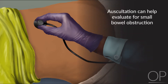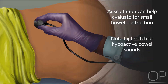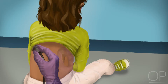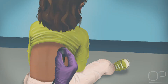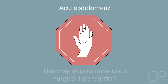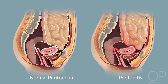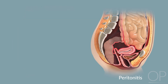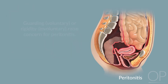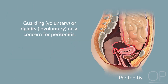Auscultation can be helpful in evaluating small bowel obstruction when high-pitched or hypoactive sounds are noted. Referred pain from pneumonia can present with abdominal pain; lung field auscultation may demonstrate crackles or decreased breath sounds. The most important objective of the abdominal exam is to evaluate for an acute abdomen, as this may require surgical intervention. Peritonitis refers to inflammation of the peritoneum, the lining of the abdominal cavity. This can occur in cholecystitis, appendicitis, or bowel perforation. Voluntary guarding or involuntary rigidity both raise concern for peritonitis, though rigidity is more specific.